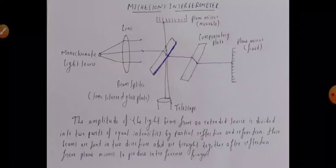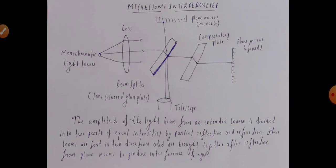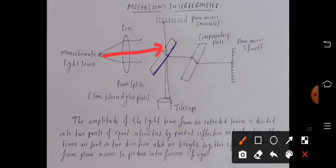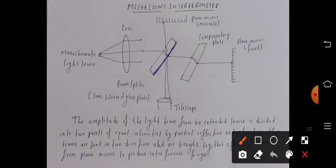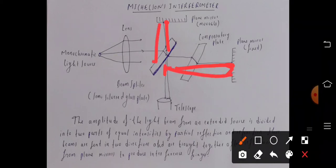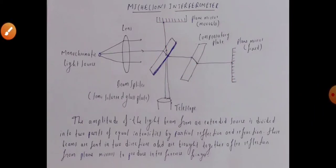The Michelson interferometer works on the principle of amplitude division. The amplitude of the light beam from an extended source is divided into two parts of equal intensities by partial reflection and refraction. The incident light beam is split into two equal parts, which are sent in two directions and brought together after reflection from the plane mirrors to form the interference pattern, observed through the telescope.